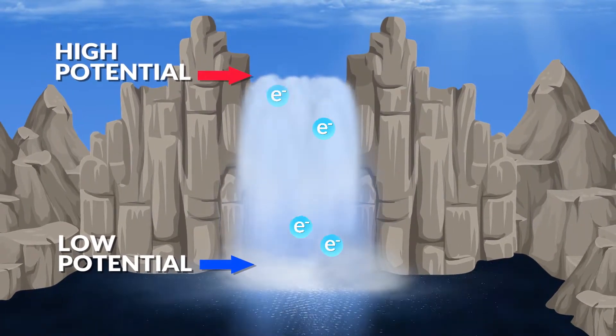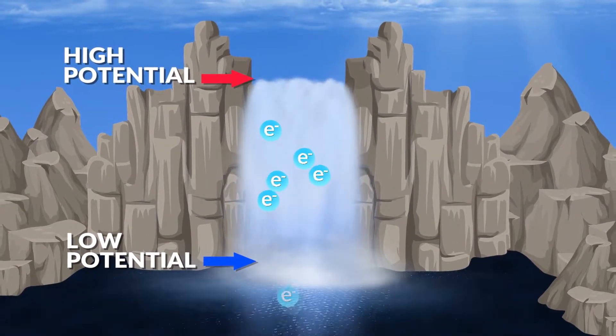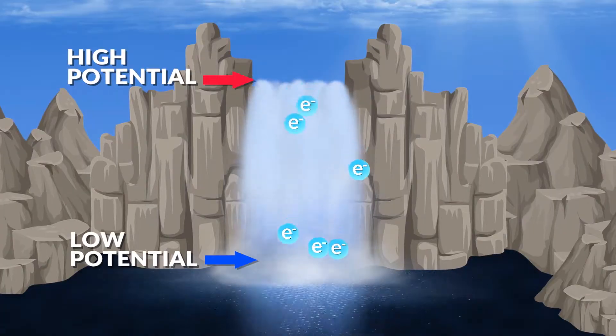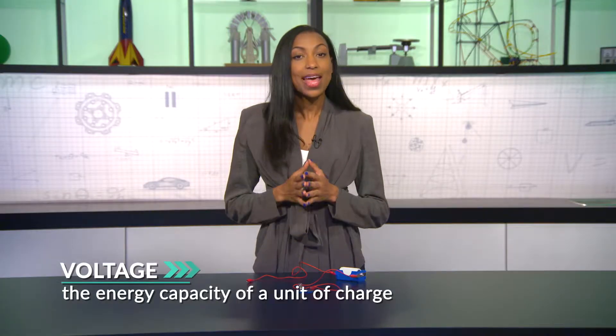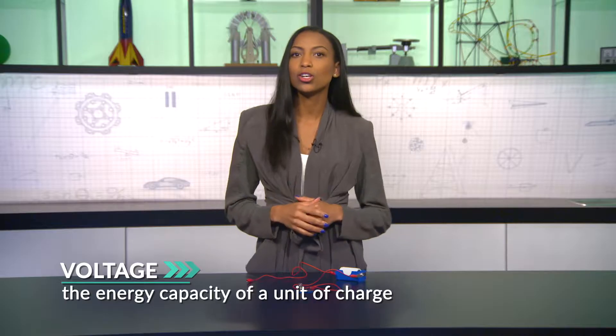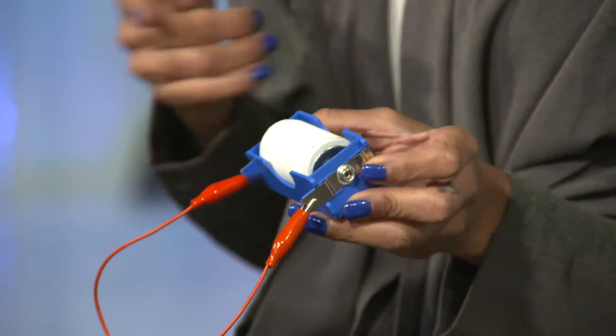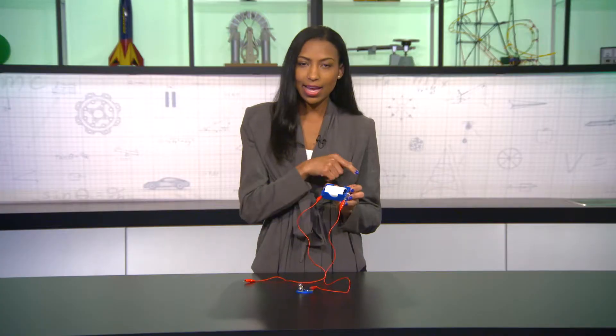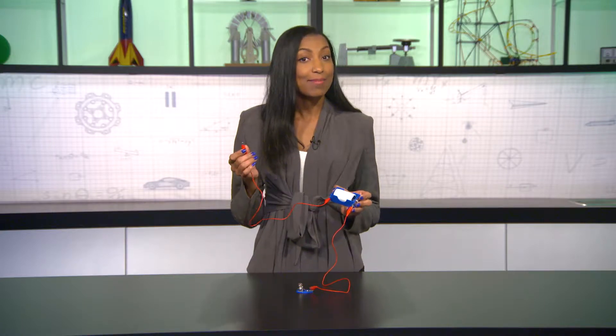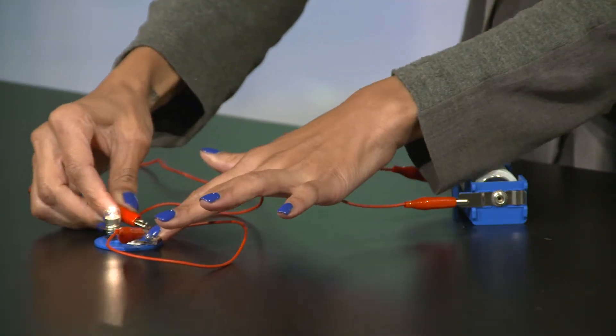When there's a point of higher potential and one of lower potential, the electrons will want to move to that point of lower potential — like water will fall down a waterfall. Electric potential is the same as voltage, which is the energy capacity of a unit of charge. We can think of it as electric pressure, which is what pushes the charge down the wire. We measure it in units called volts. That's how a battery works: one terminal has high potential — the positive — and one has lower potential — the negative. So when we connect them by way of a wire, the charges start to flow, making a current — current electricity.